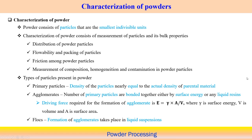Now we look into characterization of powder. Powder consists of particles that are the smallest individual units. There is a wide range of particle size possible in a given powder, depending on what kind of manufacturing process we follow. Based on that there is wide variability of particle size, but in general powder consists of particles as the smallest individual units.